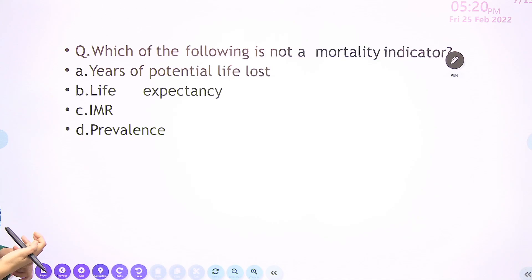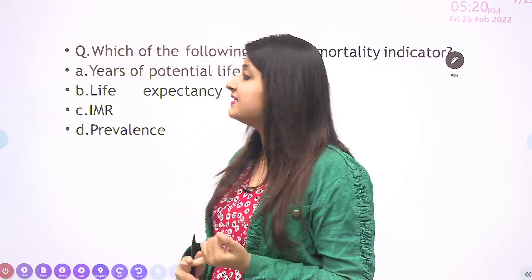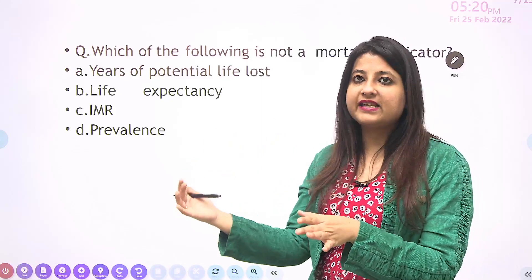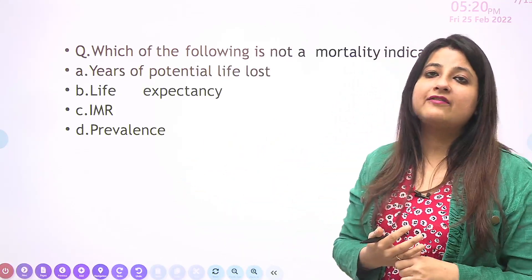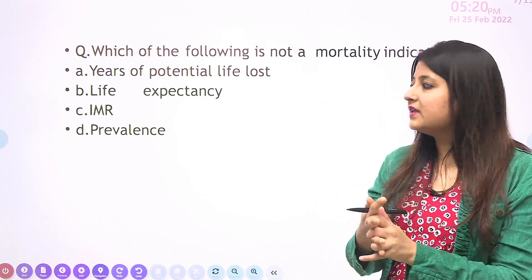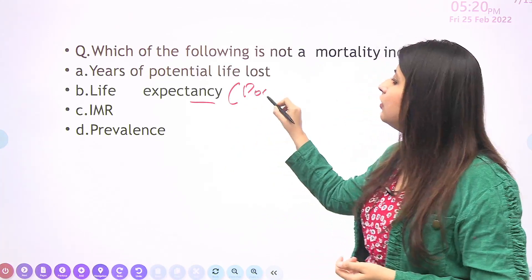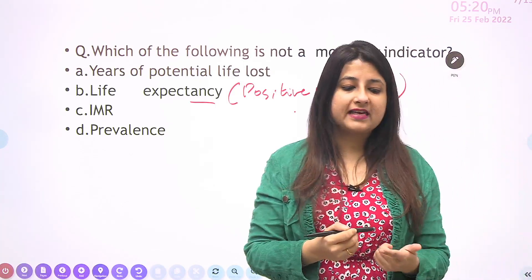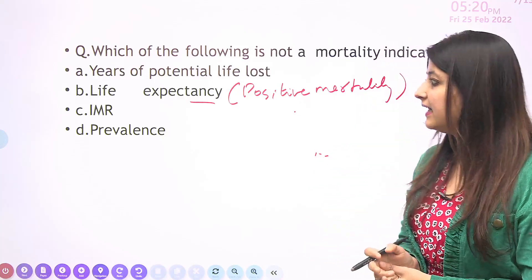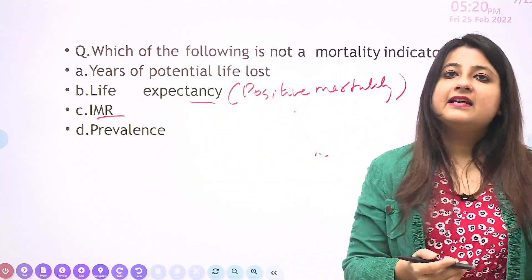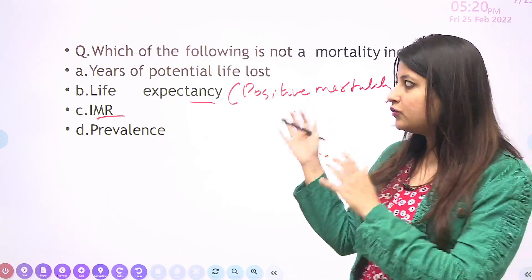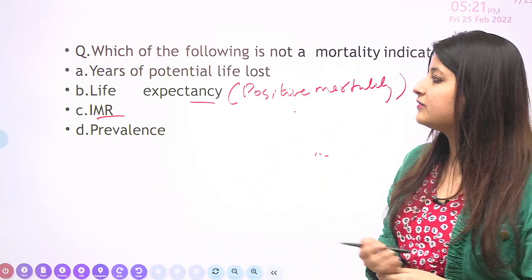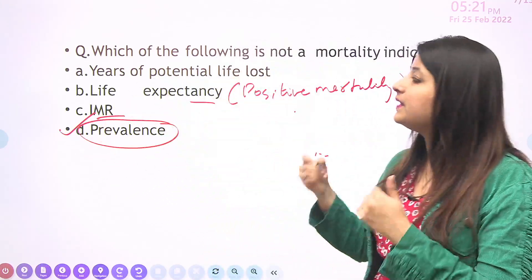Here's a question: which of the following is not a mortality indicator? Year of potential life lost — if a person is expected to survive till 75 years but dies at 30, the years of potential life lost is 45. Life expectancy is also a positive mortality indicator. Infant mortality rate is death of an infant aged 0 to 1 year per 1000 live births. The answer is prevalence — that is a morbidity indicator.